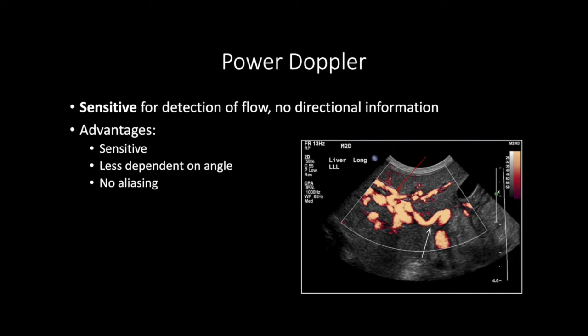Another type of color Doppler is power Doppler. Think of power Doppler as a type of color Doppler - it uses a single color rather than different colors. Power Doppler is more sensitive for detecting flow, but it doesn't provide directional information. There are a few advantages over traditional color Doppler: it's more sensitive, it's less dependent on the Doppler angle, and you won't get aliasing - we'll talk about that in a bit.